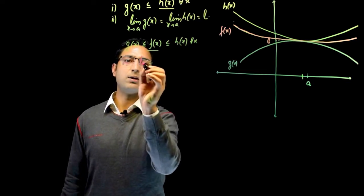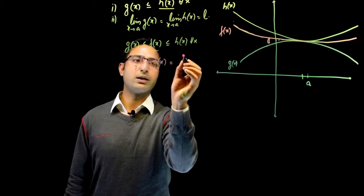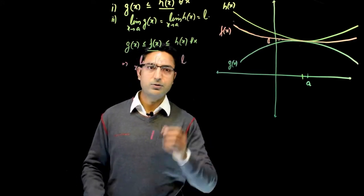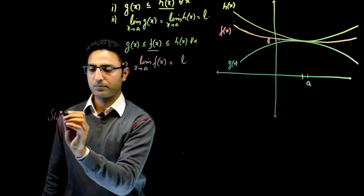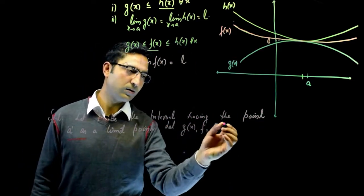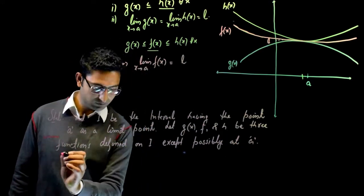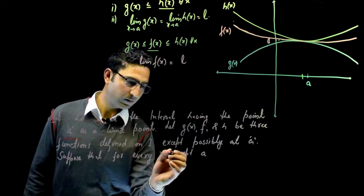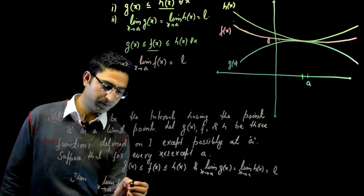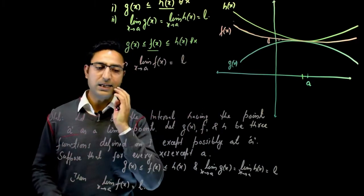So that its limit at point a is same as that of h(x) and g(x). Therefore, the conclusion is that limit of x approaches the point a of f(x) is also equal to L. This leads me to the following statement of the theorem.